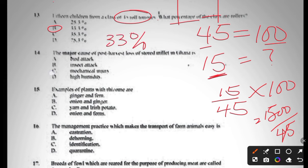Question fourteen: the most common cause of postharvest losses of stored maize in Ghana is D, high humidity. Once there is humidity, you are going to get spots. Question fifteen: examples of plants with rhizomes are ginger and fern, onion and ginger, yam and Irish potato, or onion and fern. The answer to question fifteen is A, ginger and fern.